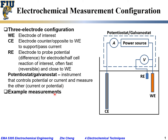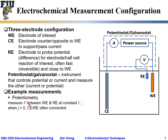As an example measurement, potentiometry means to measure the potential. You measure the voltage between the working electrode and the reference electrode when the current density j is zero. Quite often, people short or connect the working electrode and the counter electrode together in this configuration.